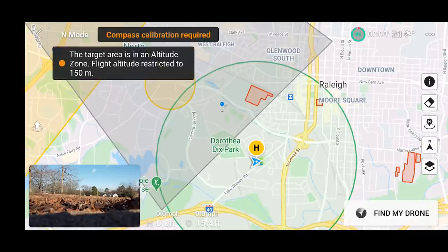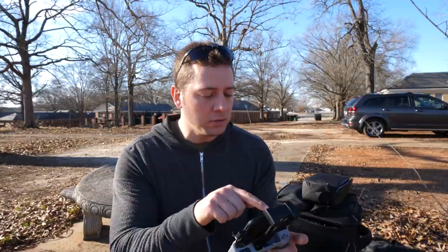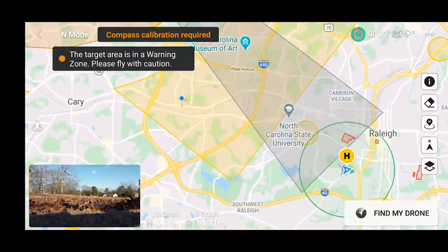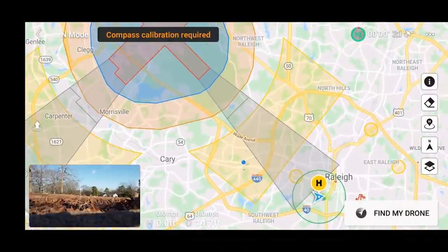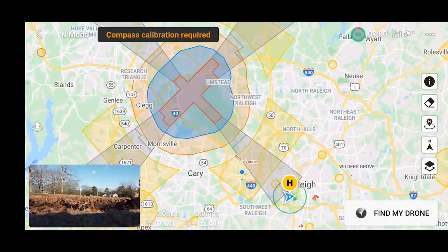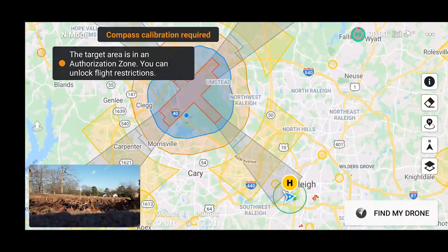You can tap on that space with your finger and it'll tell you exactly what it is. The target area is an altitude zone — flight restricted to 150 meters. Scrolling around you also see a yellow one — tap on that and it's a warning zone that says please fly with caution. Tapping right on the airport shows an authorization zone where you can unlock flight restrictions. But unlocking within the DJI Fly app doesn't mean you're legally unlocked — you'd still have to contact the FAA and get clearance to fly legally in these spaces.